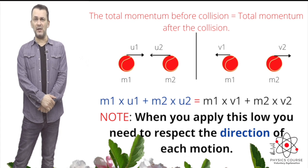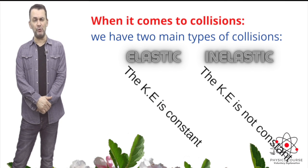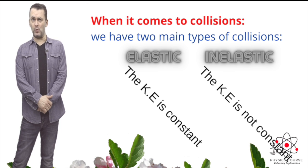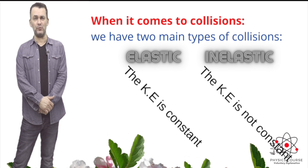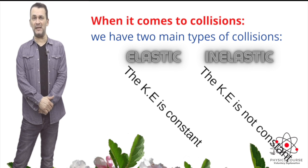Be careful when applying this law — we must respect the direction of velocity consistently throughout the problem. For example, if the direction to the left is positive, then the direction to the right must be negative from the beginning to the end. Also keep in mind that kinetic energy can be involved: if the collision is elastic, the total kinetic energy before equals the total kinetic energy after. But if there is energy loss during impact, the collision is inelastic and kinetic energy will be less after the collision.